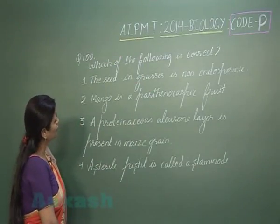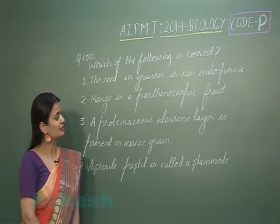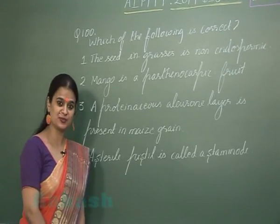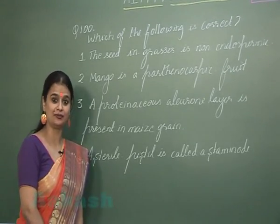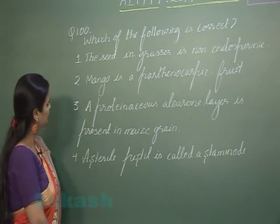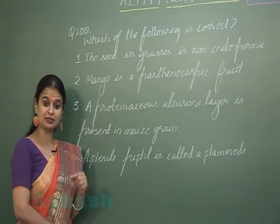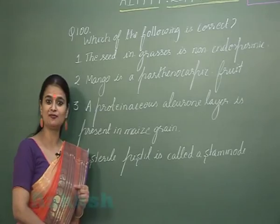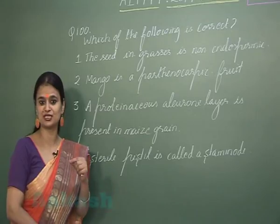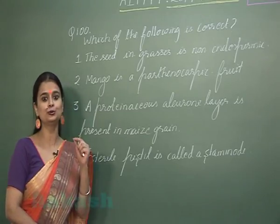Question number 100 — which of the following is correct? The first option says the seed in grasses is non-endospermic. Grasses represent monocots, and in monocots there is presence of endospermic seed, so this is incorrect. The second option says mango is a parthenocarpic fruit. A parthenocarpic fruit is one formed without fertilization, but mango is formed with fertilization, so it is a true fruit — also incorrect.